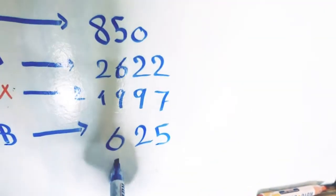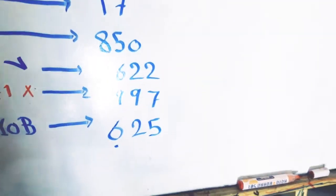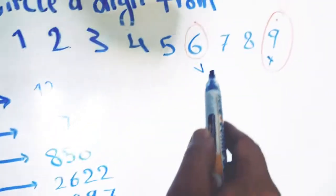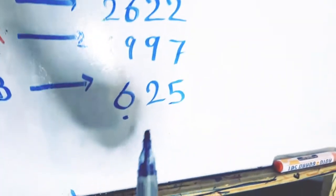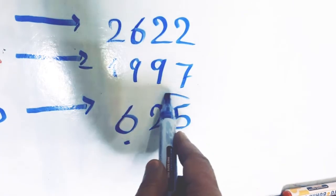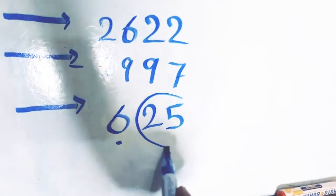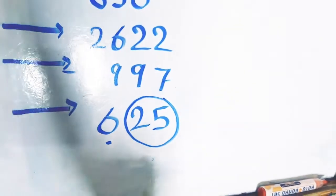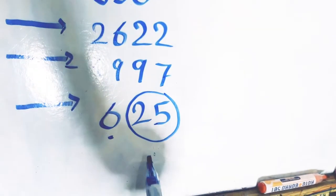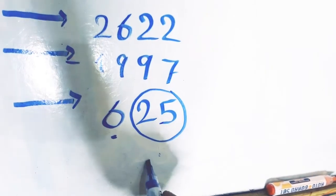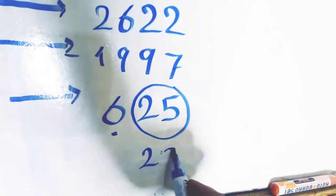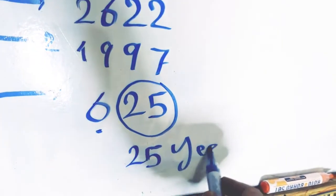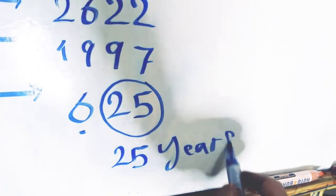Look at the digit on the left side — it's 6, the digit which you selected. The other two digits, 25, is your age. So your age is 25 years.